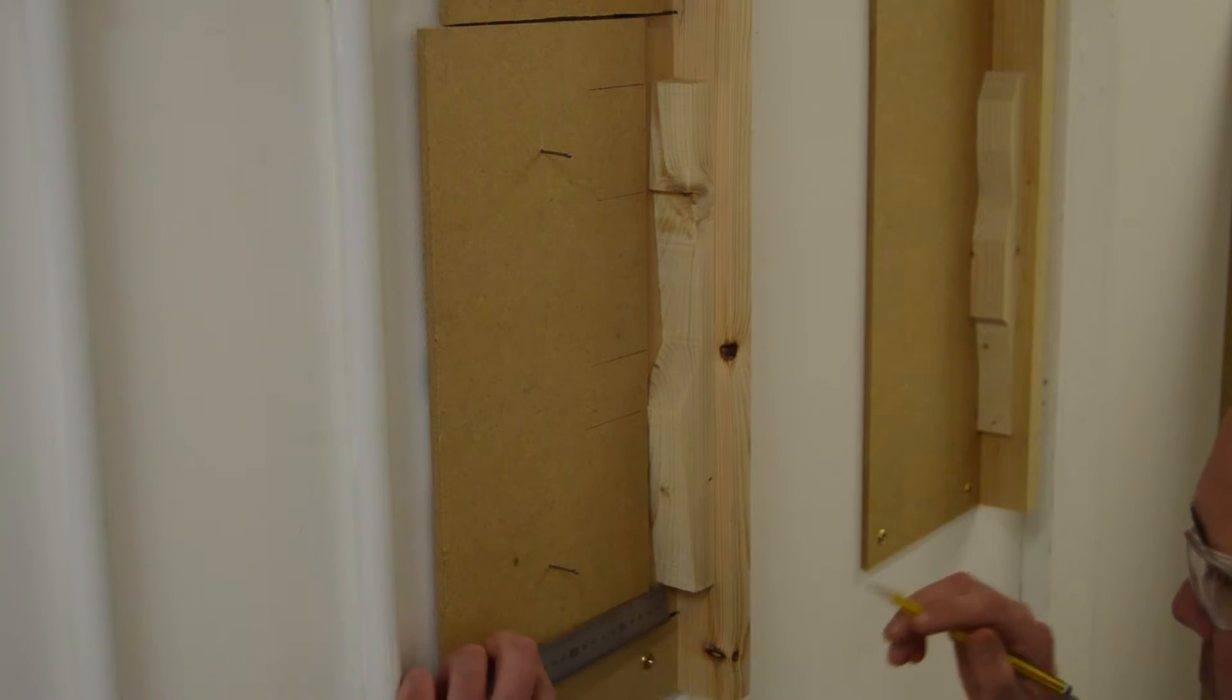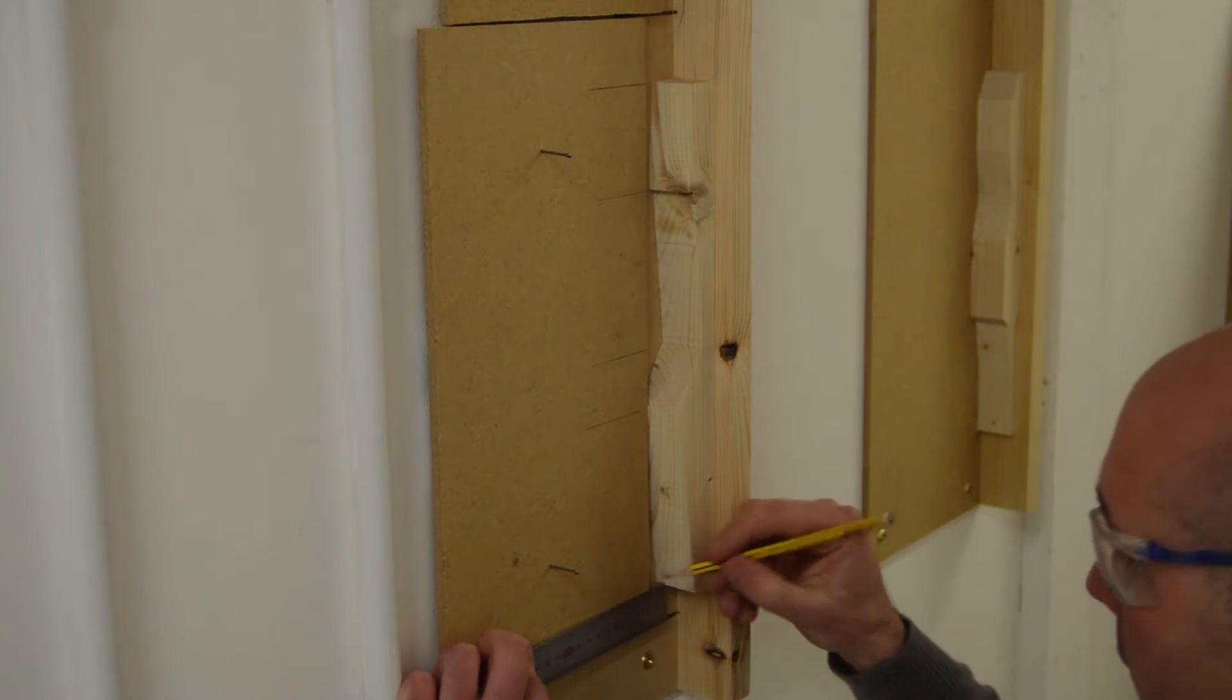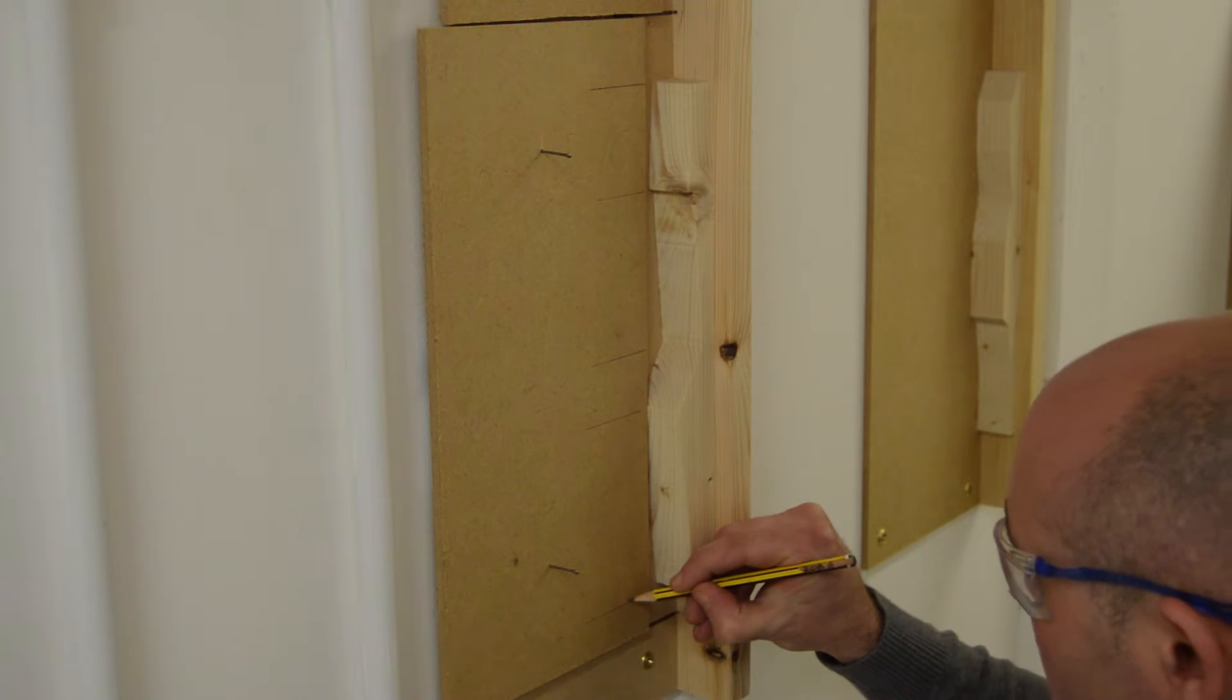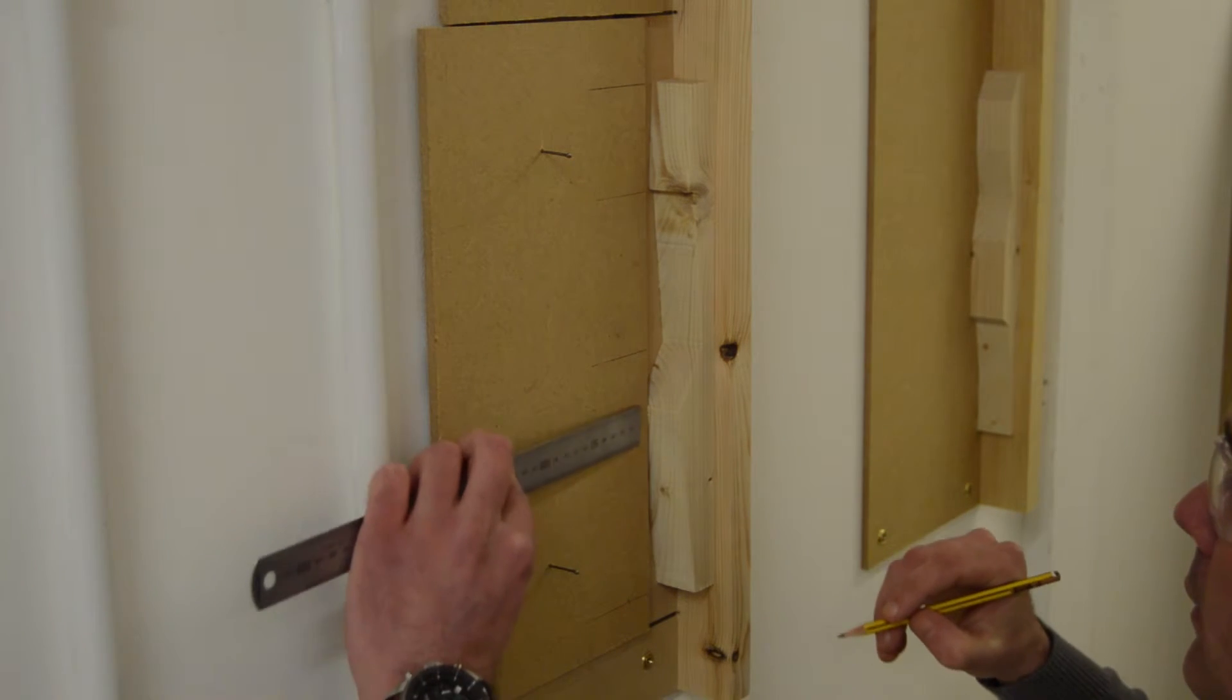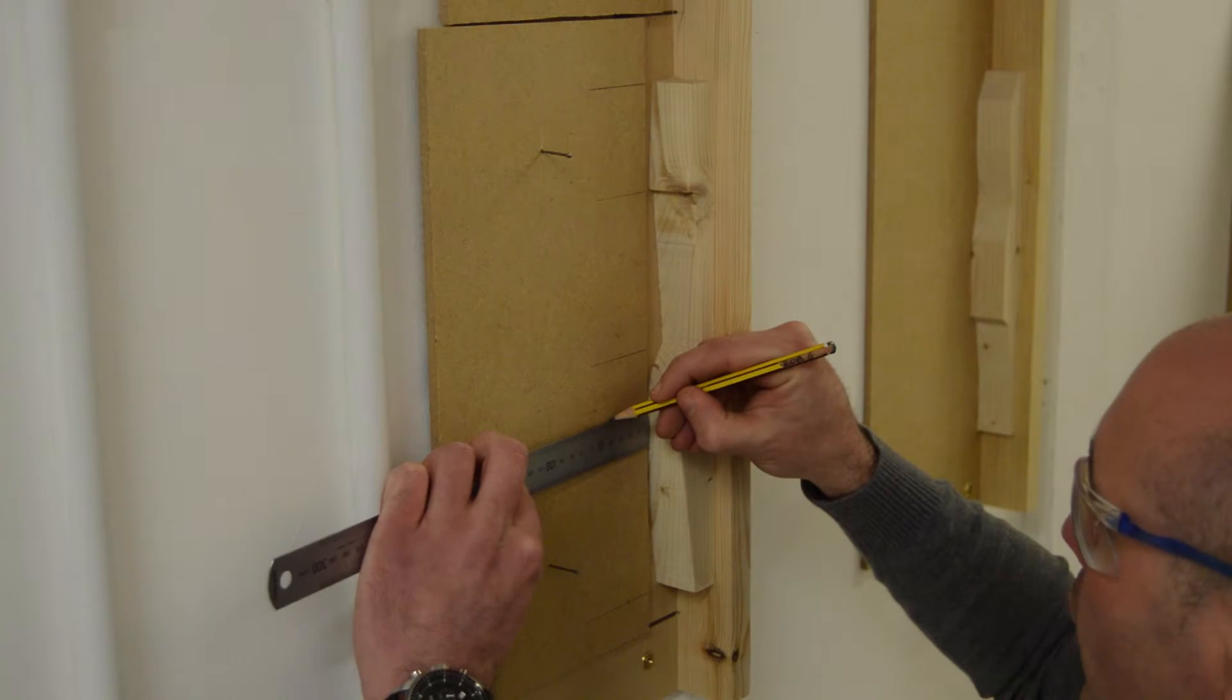Now from each little bit here I'm going to touch the rule against the bit that we're scribing and put a little dot. Put a dot there at each point.